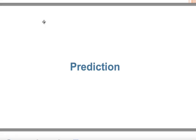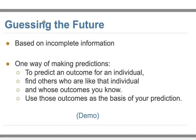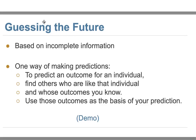In data science, we want to figure out — according to the data we observe — what kind of information we can get. One important thing is we want to predict the future based on our data. To be simple, prediction is guessing the future based on incomplete information, because when we do sampling and collect data we have some information but it may not be complete.